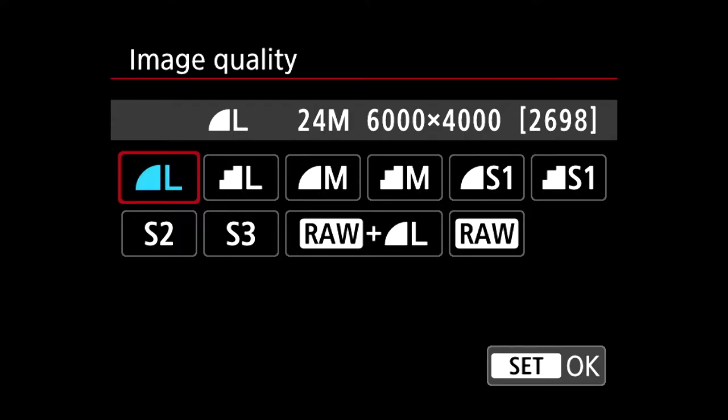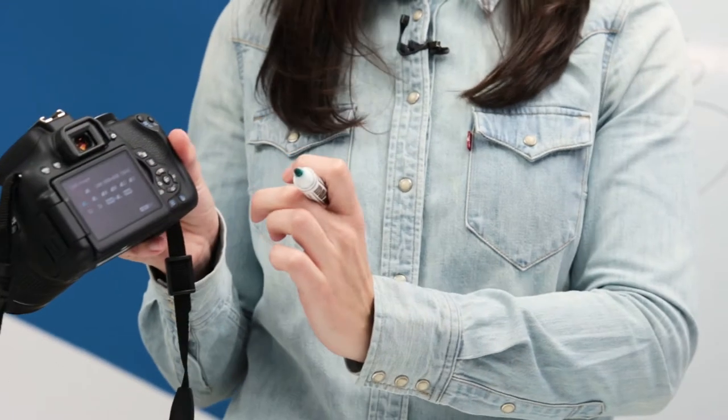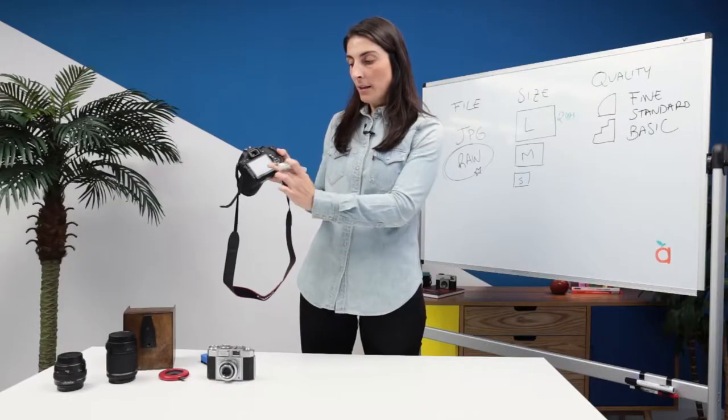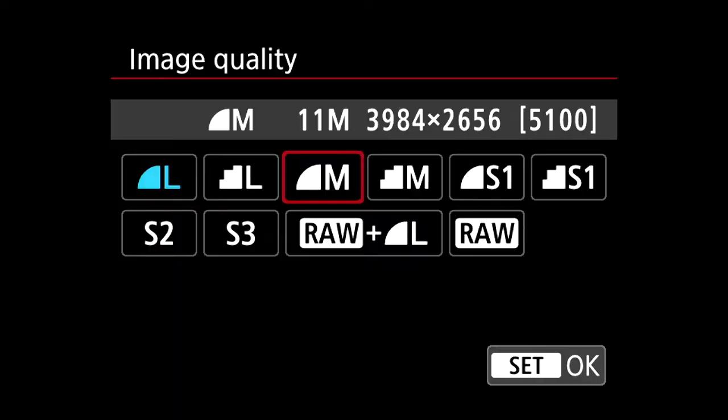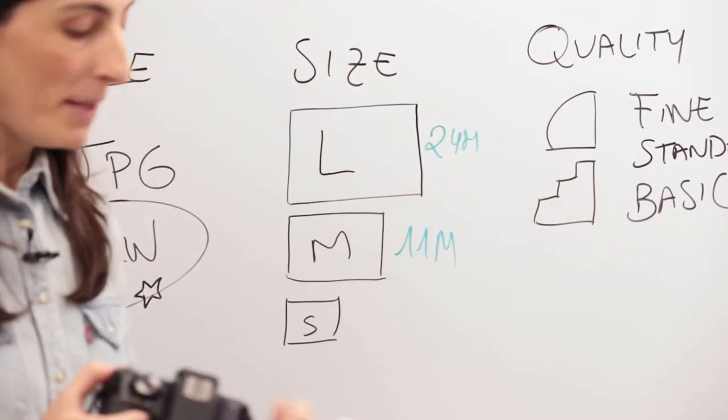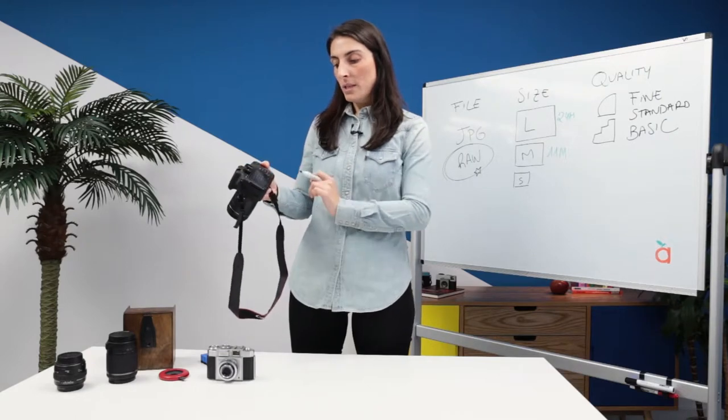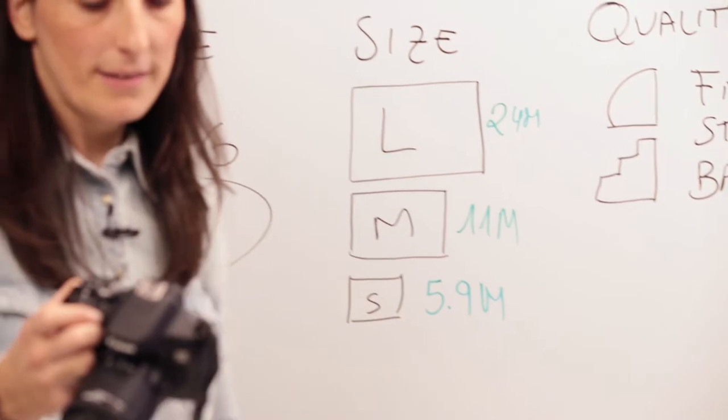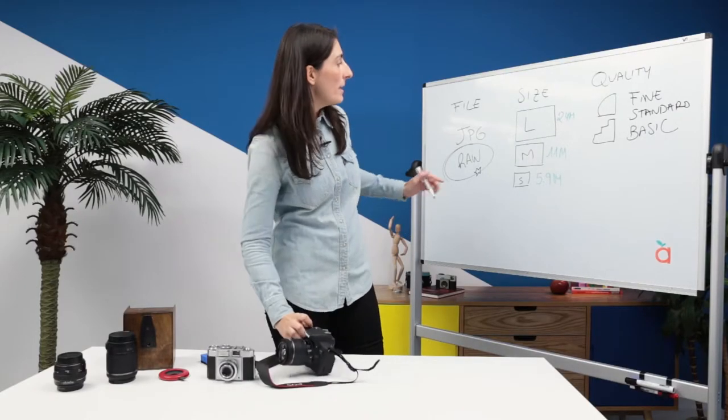As you can see right here, the large size option allows us to take pictures of 24 million pixels. Normally, it's the manufacturer who specifies the height and width in pixels. For example, let's see a medium size which has 11 million pixels and then the small size with 5.9 million pixels. All this means, basically, that size refers to the height and width of the picture of a printed image.